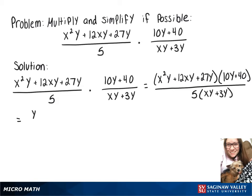On that first set of parentheses on top, we can factor out a y, which leaves x squared plus 12x plus 27. And in that second set of parentheses on top, we can factor out a 10, so I'll bring that out front, and that'll leave y plus 4.